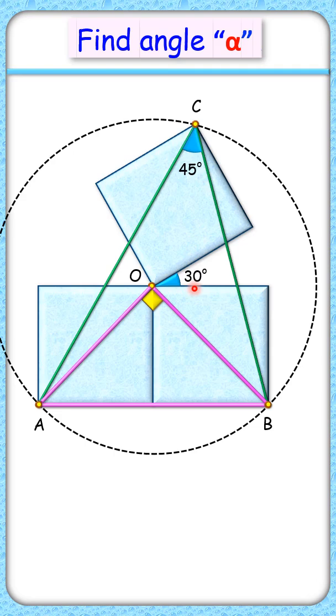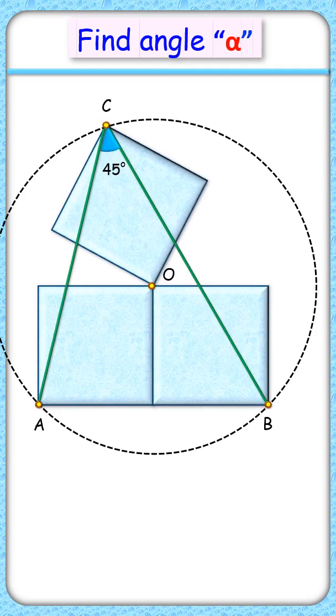And here we'll observe this 30 degree has no role to play. So if we rotate this square to whatever degree, the value of angle C will remain 45 degrees.